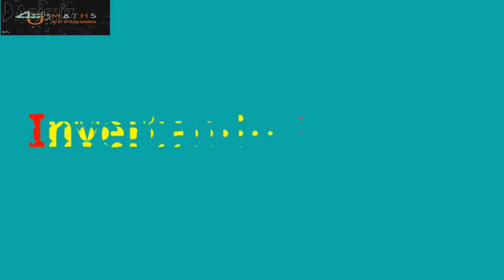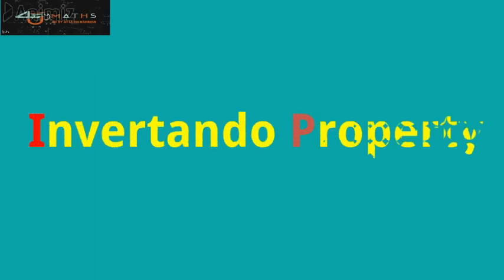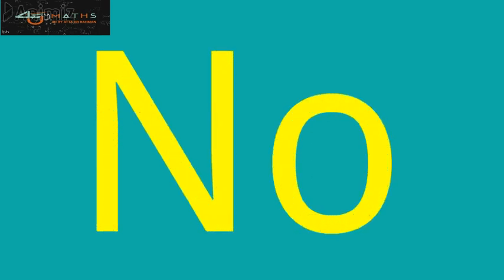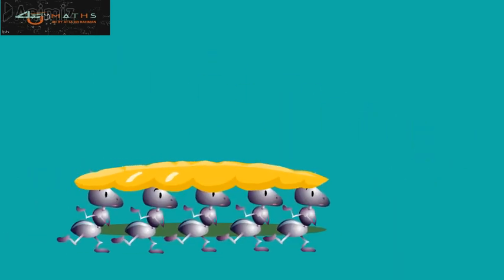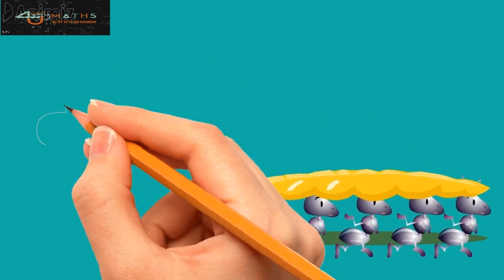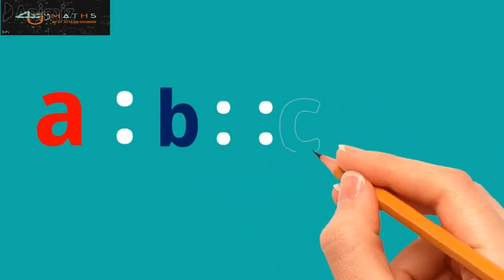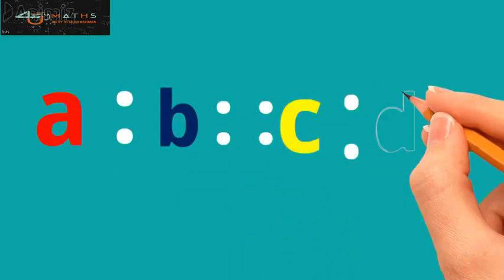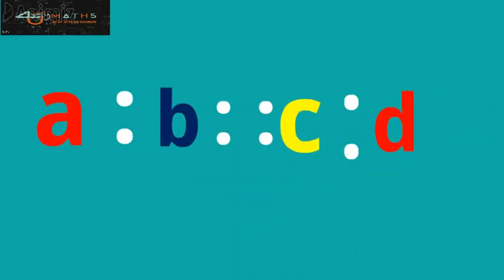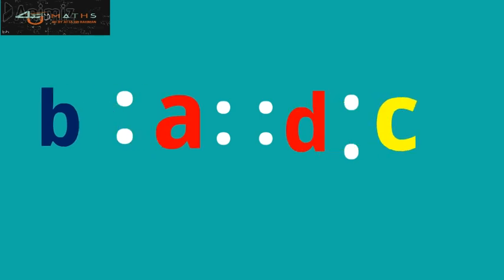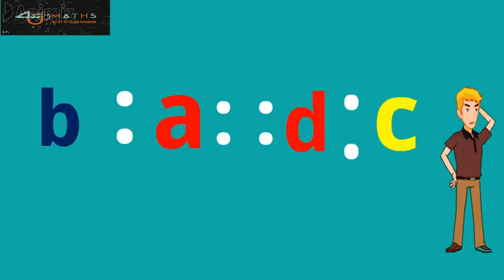Hello Dears. Do you know the Invertendo property of Proportion? If no, here it comes. If A ratio B is proportional to C ratio D, then B ratio A is also proportional to D ratio C.